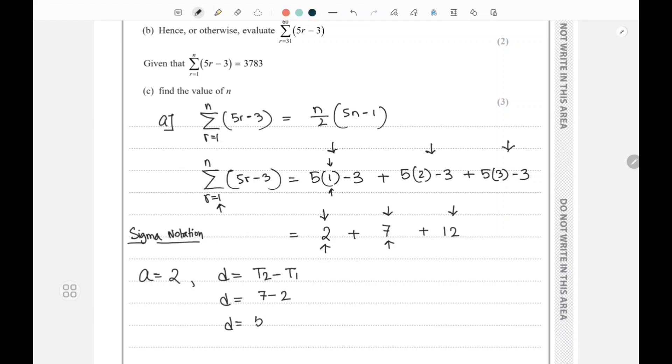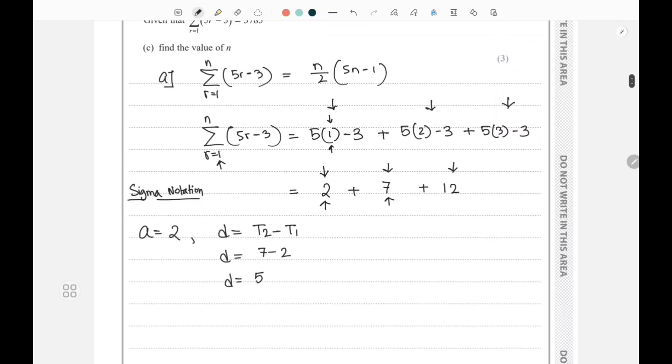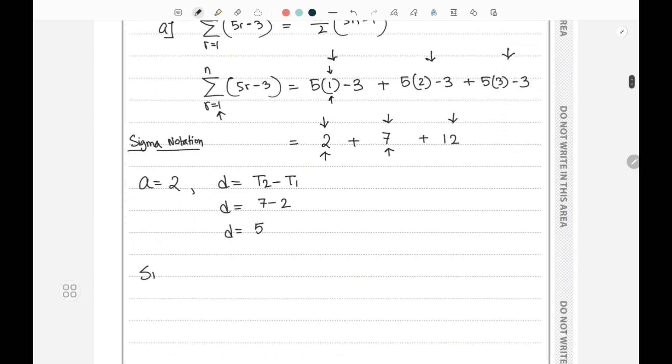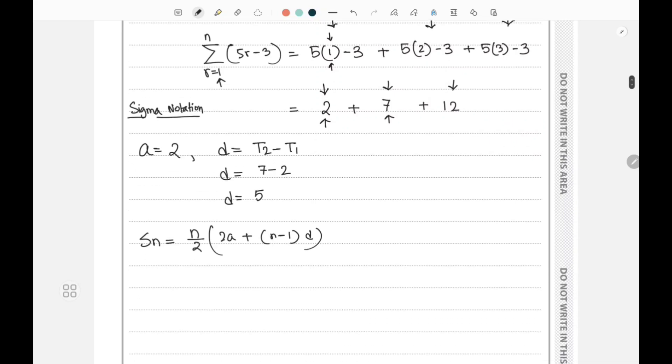Now if I write S of n for an AP, the formula is n divided by 2 times (2a + (n-1)d).